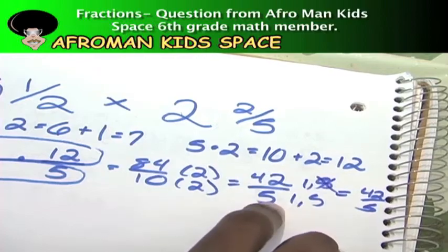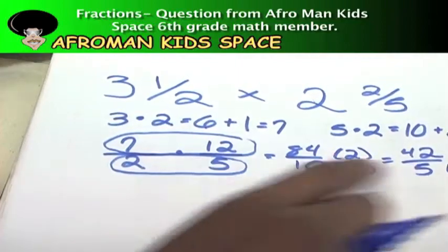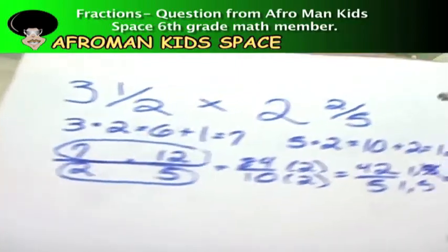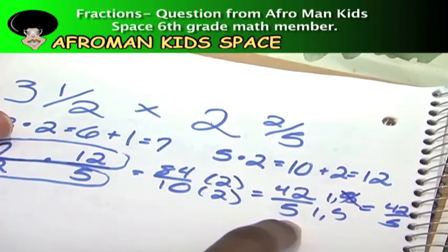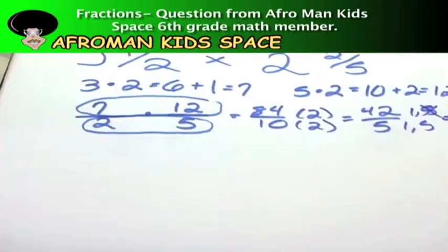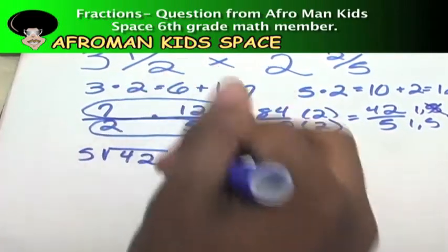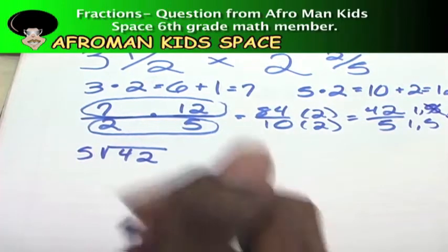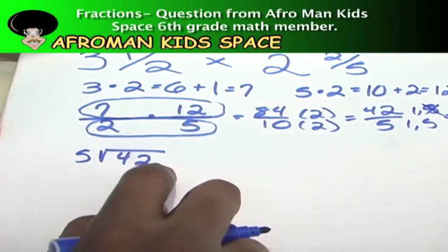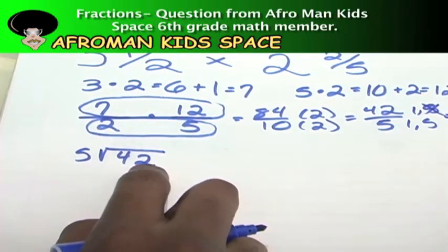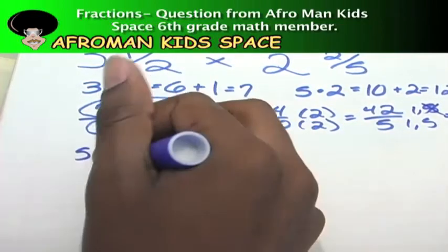From there, all we do to change it back into the whole fraction is divide. 42 over 5 is the same thing as saying 42 divided by 5. So all we do is 5 into 42. Okay, so 5 goes into 4 zero times. 5 goes into 42, yeah, 5 can go into 42 eight times. So 5 times 8 gives us 40.